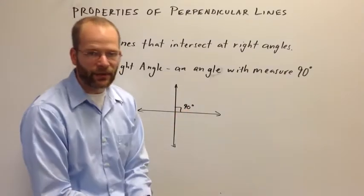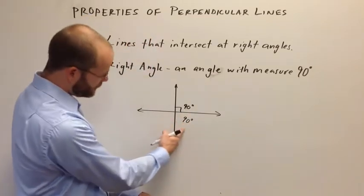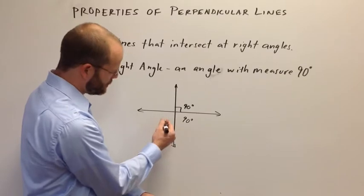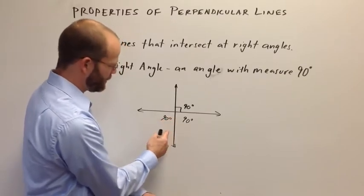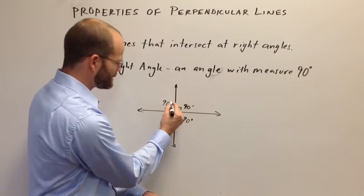Therefore, their sum must be 180. Since this one's 90, this one must also be 90. We have a linear pair here as well, so that's 90 degrees. And we have another linear pair here, or here, so that's 90 degrees.